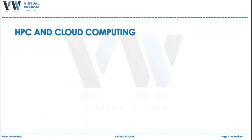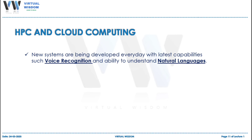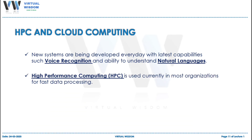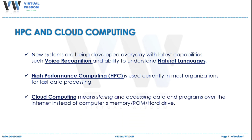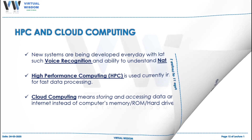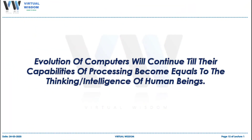Since the evolution of computer is a continuous process, new systems are getting introduced every day with great features including voice recognition and natural languages. High Performance Computing (HPC) is being used in data centers for fast processing, and is also used for running the latest programs efficiently and reliably. A cloud computing concept has also been introduced in the industry for saving and securing data and programs over the internet, instead of saving data over a computer's memory, ROM, or hard drive, which can get corrupted anytime. We can conclude by saying that the evolution of computers will continue until their processing capabilities become equal to the intelligence of human beings.